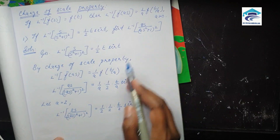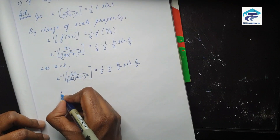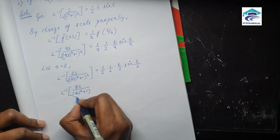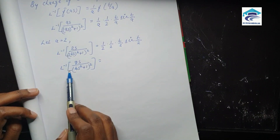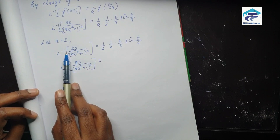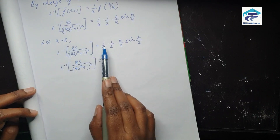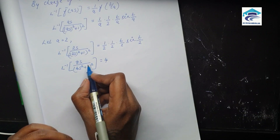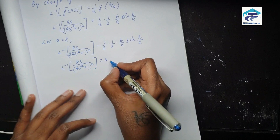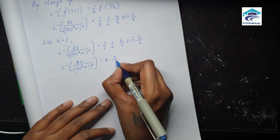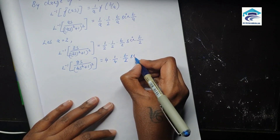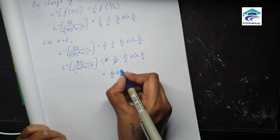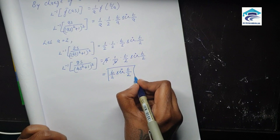Comparing with the question — we need L inverse of 8s by (4s² + 1)². To match this, we multiply by the constant 4. So 4 times the L inverse term gives the answer: 4 times 1 by 4 times t by 2 times sin(t by 2). The 4s cancel, giving the final answer: t by 2 times sin(t by 2).